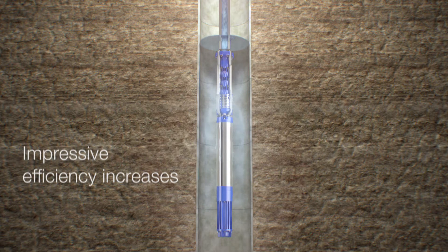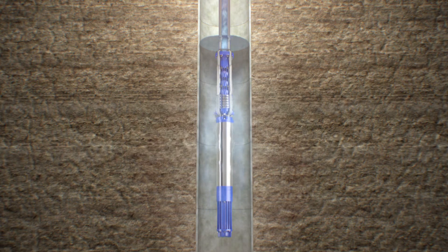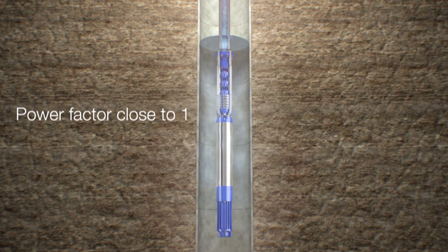In addition, IPM motors have a power factor close to 1. Current compensation thereby becomes redundant.